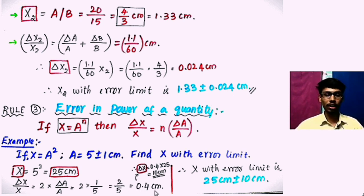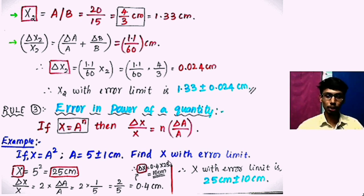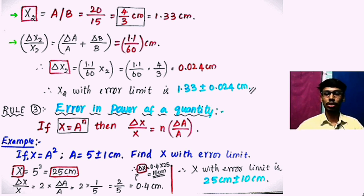So del x divided by x equals 0.4. To get the absolute error del x, we cross-multiply by x: del x equals 0.4 times 25, which gives del x equal to 10 centimeter. So the absolute error in x is 10 centimeter. Therefore, x with error limit is 25 plus or minus 10 centimeter.